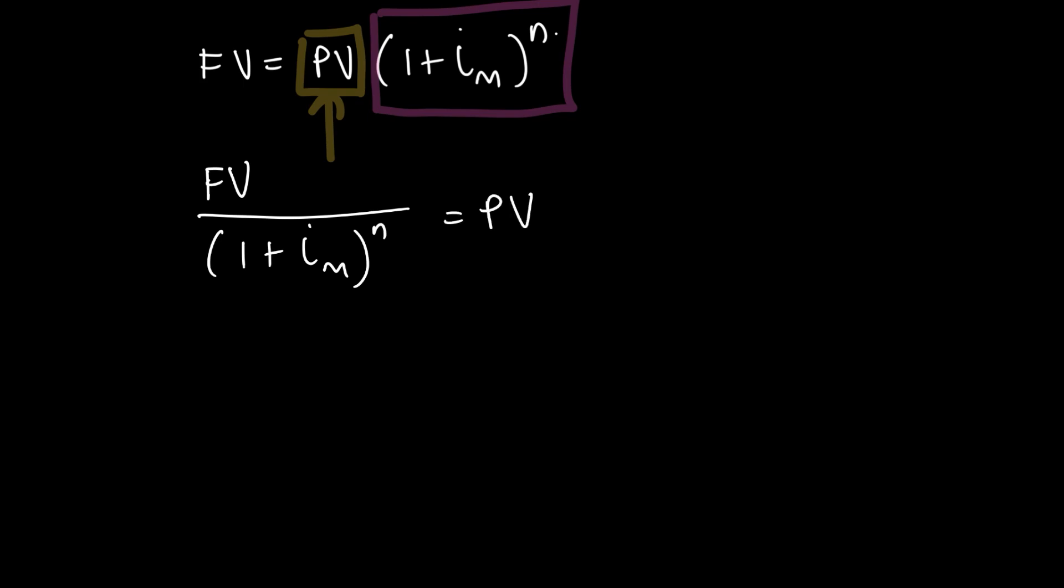And if we don't like reading it like that, we can just rewrite it as PV is equal to FV over 1 plus i over m to the power of n.